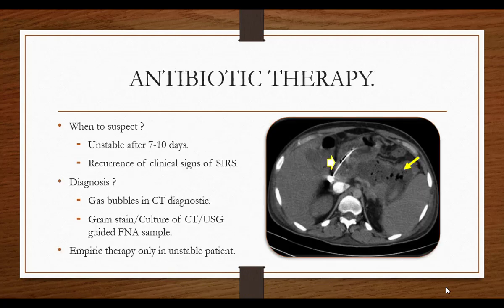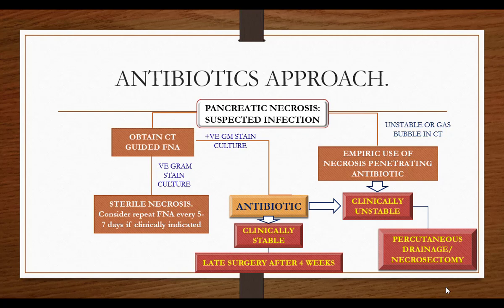When do we suspect infection? When patients become unstable after initial stabilization, usually after 7 to 10 days, or when there is recurrence of SIRS after initial improvement. How to confirm: if CT shows air pockets or air bubbles within the necrotic pancreas, that is diagnostic of infection. Confirm with CT or ultrasound-guided FNA, and send blood cultures. Empiric therapy only for unstable patients — otherwise try to establish the diagnosis first.